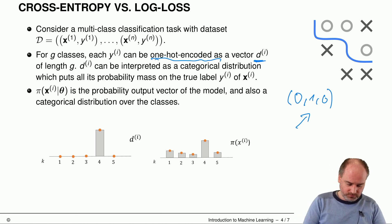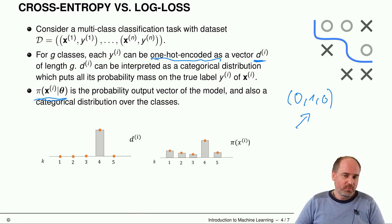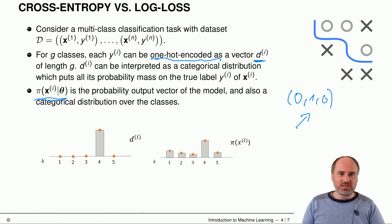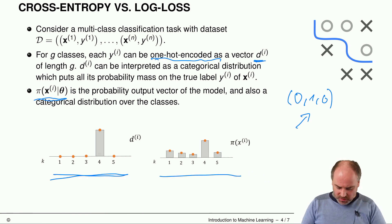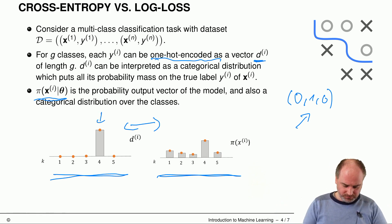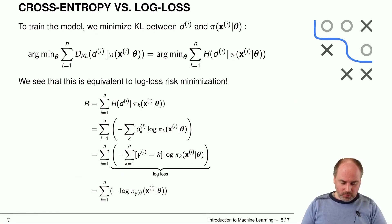We can also look at the prediction of our machine learning model for this dataset. We use pi of x_i as our notation, or pi of x_i under parameter vector theta. This is also a probability distribution over g classes — a categorical distribution. So d_i is our true deterministic distribution and pi is our model's probabilistic prediction, which should be compared against the observed class label.